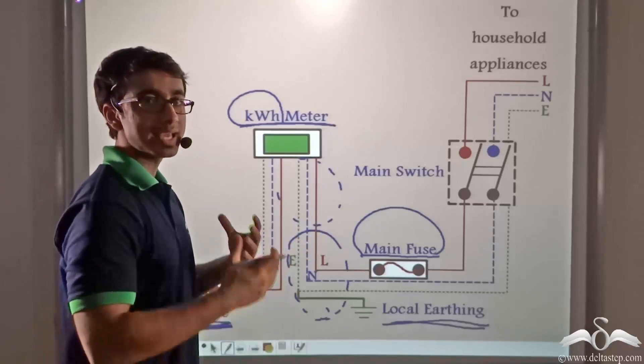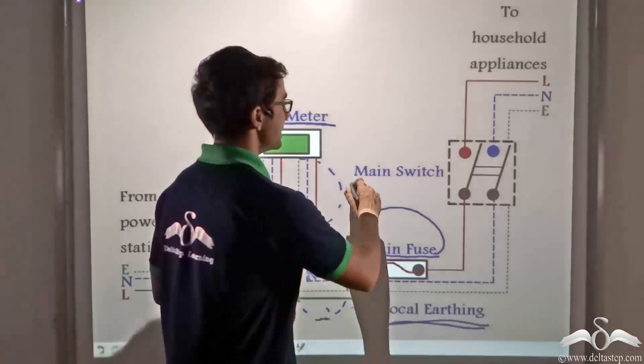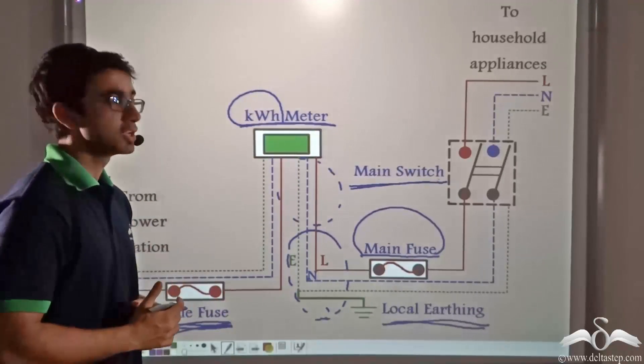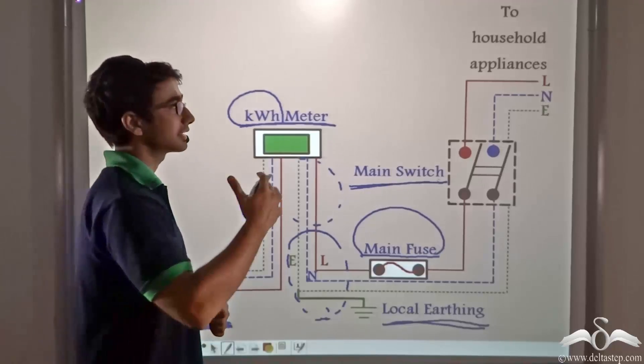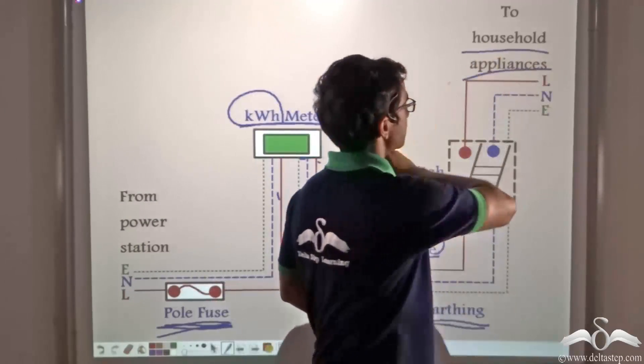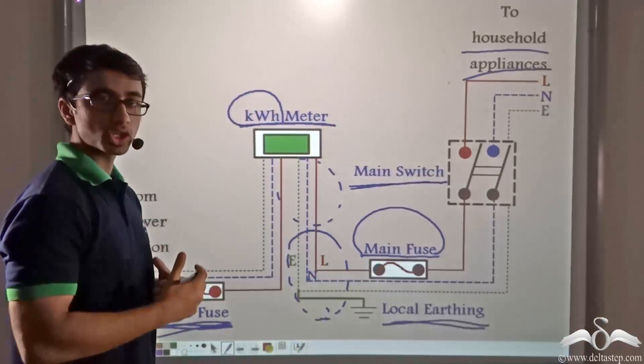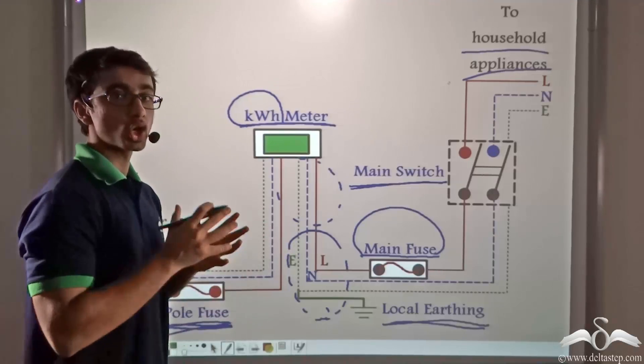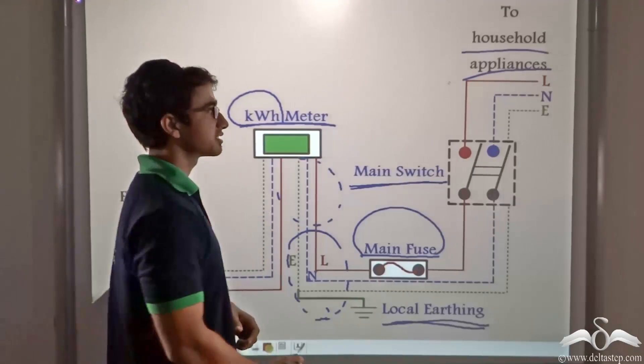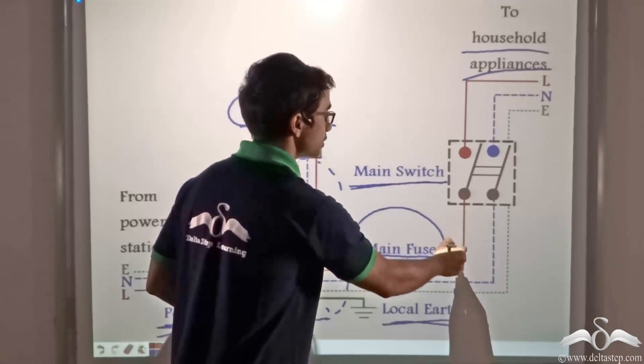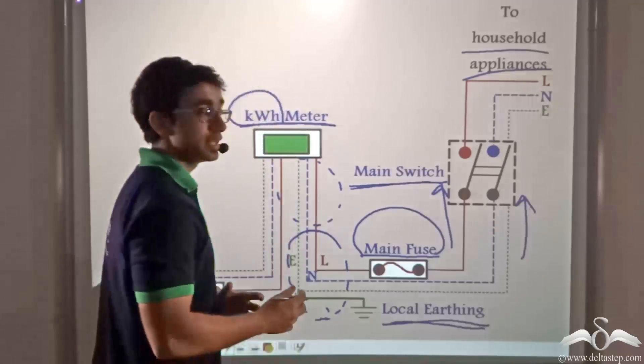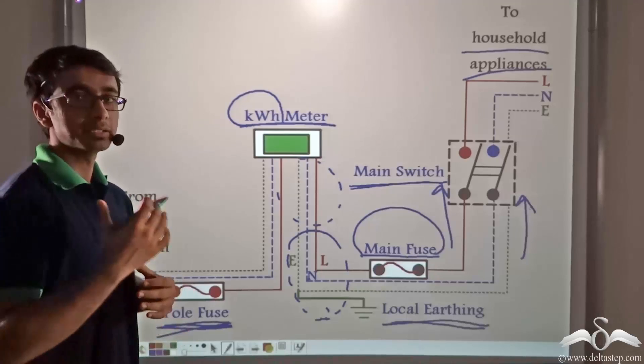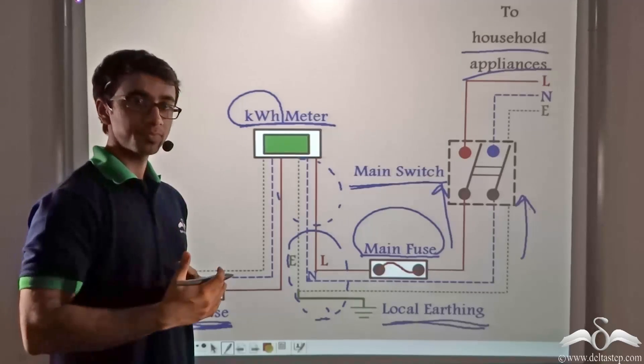And the last equipment before we actually get the electricity in our homes is the mains or the main switch. This main switch is always to be switched on so that the current which is coming from the power station can reach our home and it can reach all the household appliances. Whenever the main switch is switched off, you will notice that no matter what switch of whichever appliance you switch on, they will not be able to function. Why? Because if the main switch is off, the circuit that begins absolutely at this point will not be able to function because the switch is open. So this is how we find that the power or the current reaches the home from the power station.